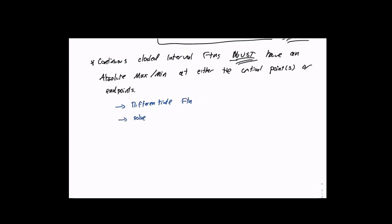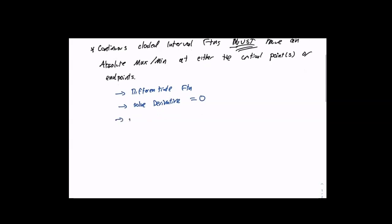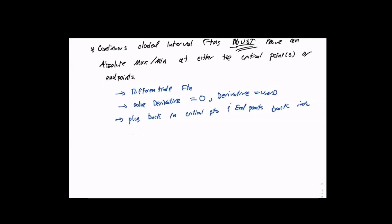We solve the derivative equal to zero, and then we plug back in critical points and endpoints. Sometimes there's not even a critical point. We also check where the derivative is undefined — I'm going to show you an example of that today. Then we plug endpoints back into the original function to find absolute extrema.